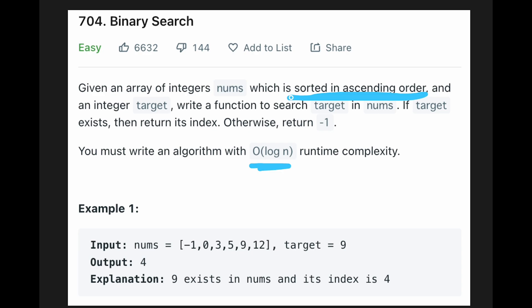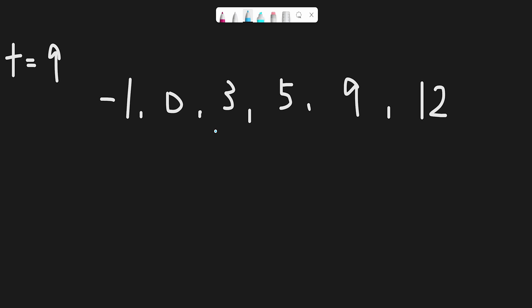Let me explain how to solve this question with an example. To solve this question with binary search, make sure the input array is sorted in ascending order. The target is 9. To solve this question, we use two pointers: one is the left pointer and the other is the right pointer. Every time we calculate the middle point between the left pointer and the right pointer.